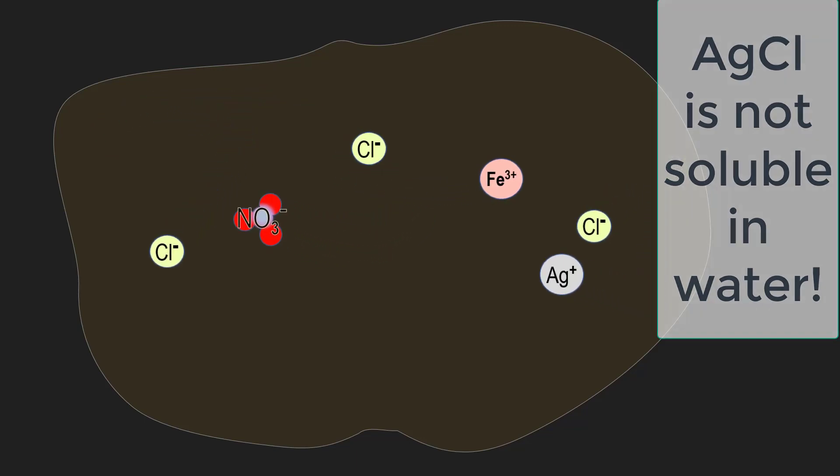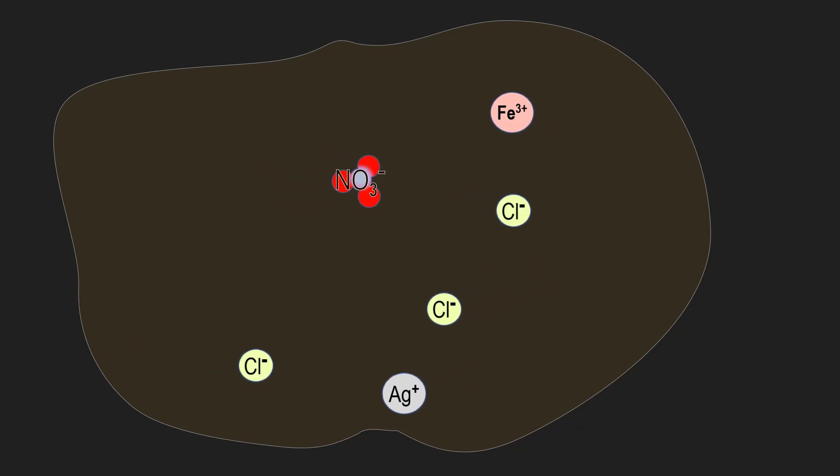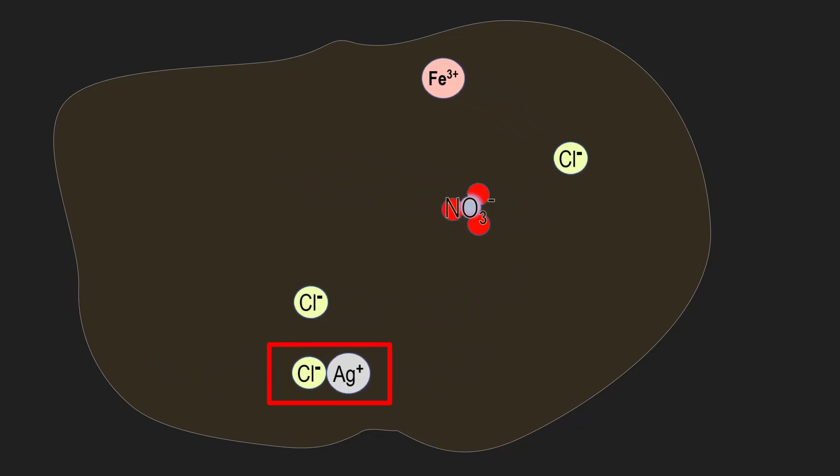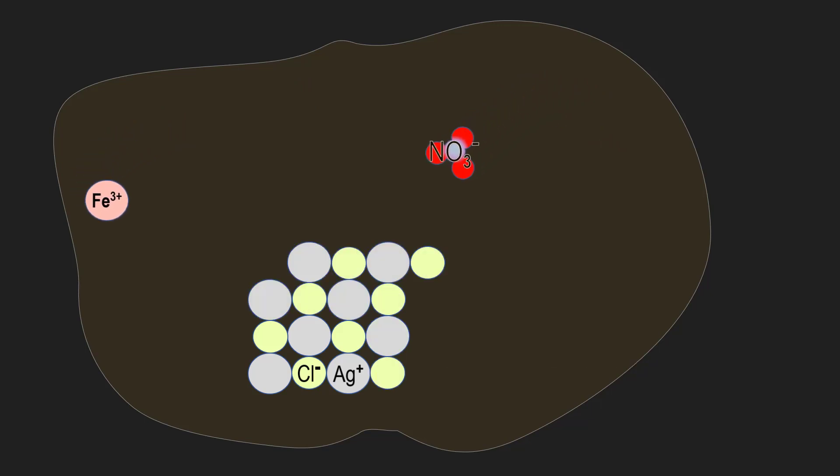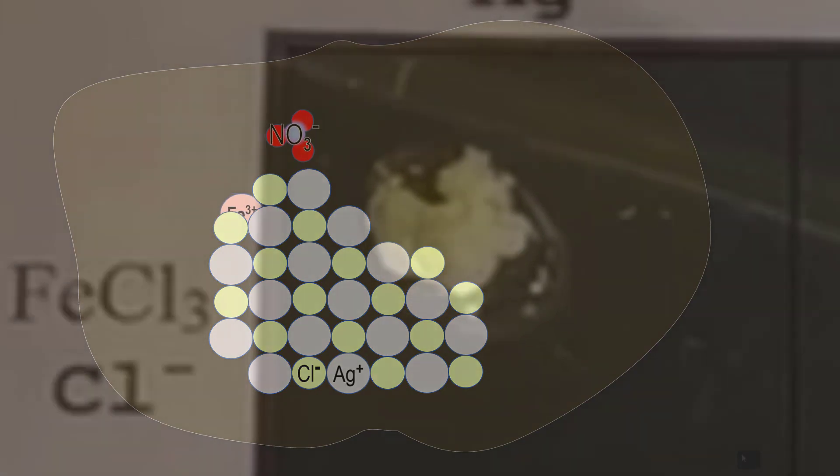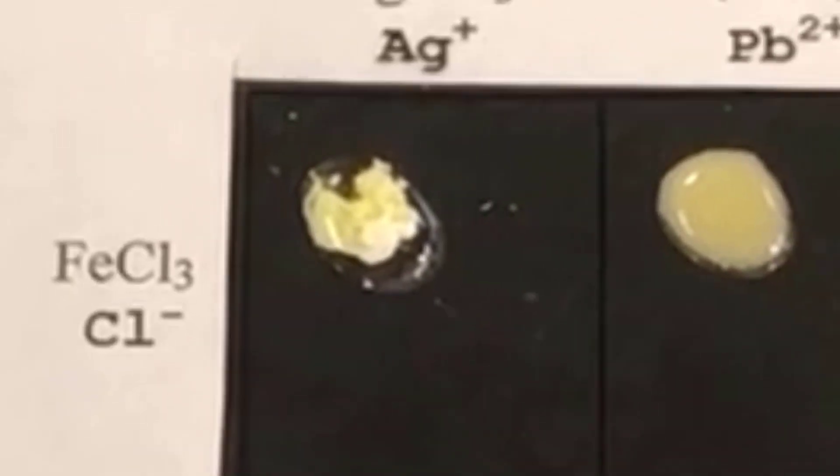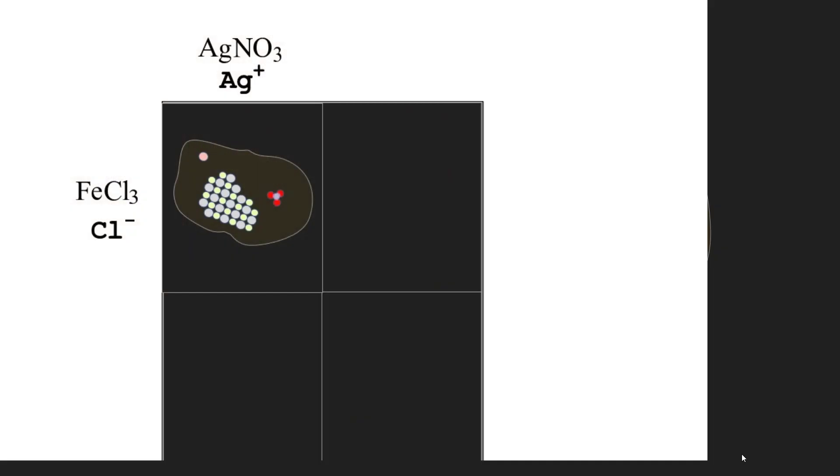And so whenever a silver ion collides with a chloride ion, they will bond and form an ionic solid in the water. There are actually many, many quadrillions of ions in these small droplets of solution, and so the AgCl compound quickly builds to the point where we can see it with our eyes. The same mechanism occurs in all the other boxes, with the ions written below the compounds coming together to form this solid compound.